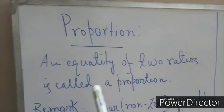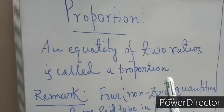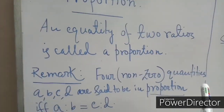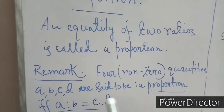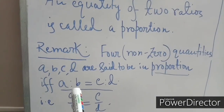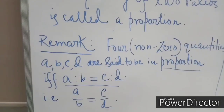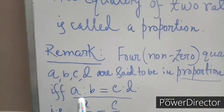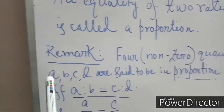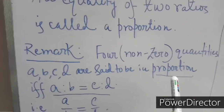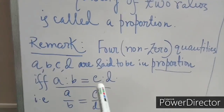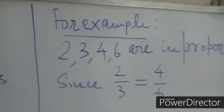Our next topic is Proportion. The equality of two ratios is called a proportion. For non-zero quantities a, b, c, d — they are said to be in proportion if and only if a : b = c : d, meaning a/b = c/d.